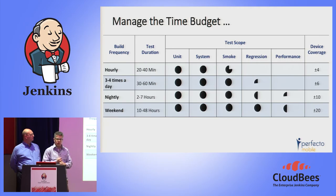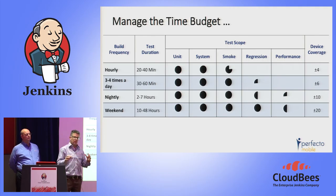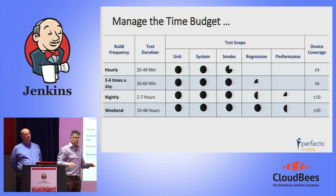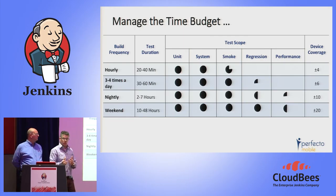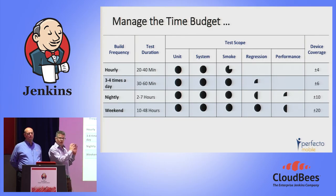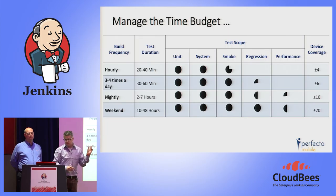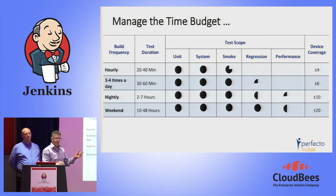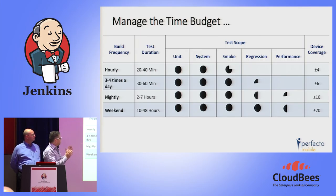Parallel execution, cross-platform testing, unattended automation, controlling system pop-ups, eliminating CI blockers — all of this, when combined, means you can start the week with almost 20 devices covered and a significant level of confidence. When you just focus on testing, eliminate all blockers, and use different object types and object recognition techniques, this allows you to pack into one weekend a test automation cycle covering a wide range of mobile application aspects.